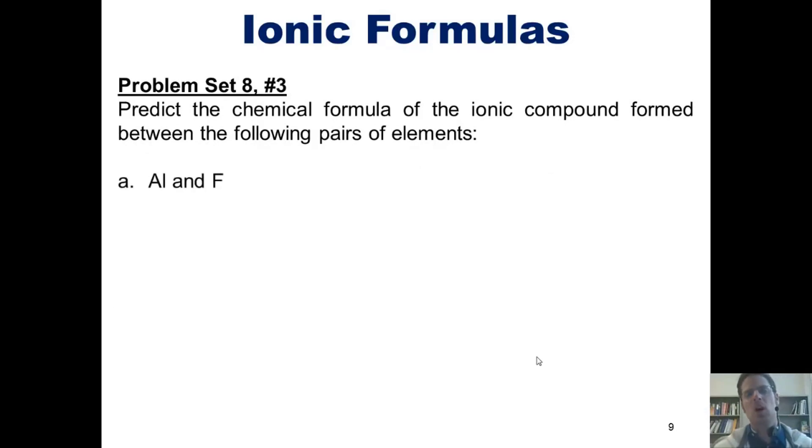Here's our first example, aluminum and fluorine. You'll note that aluminum is in group 3A of the periodic table. It's also a metal, which means that it generally wants to lose electrons. Because it's in that group, it's going to lose three electrons to feel like the preceding noble gas, neon. Thus,